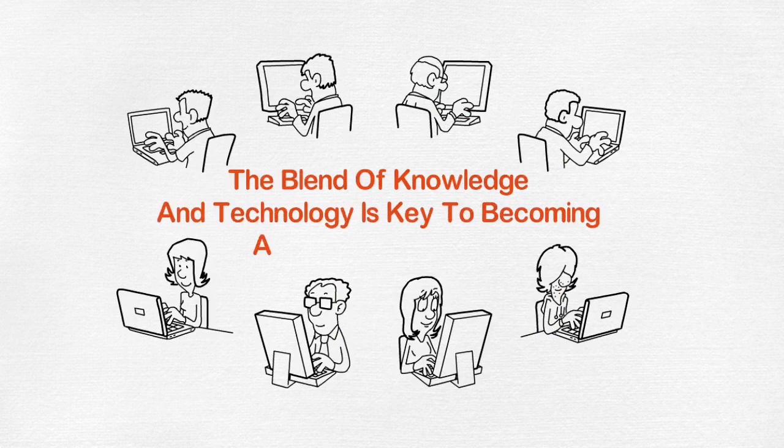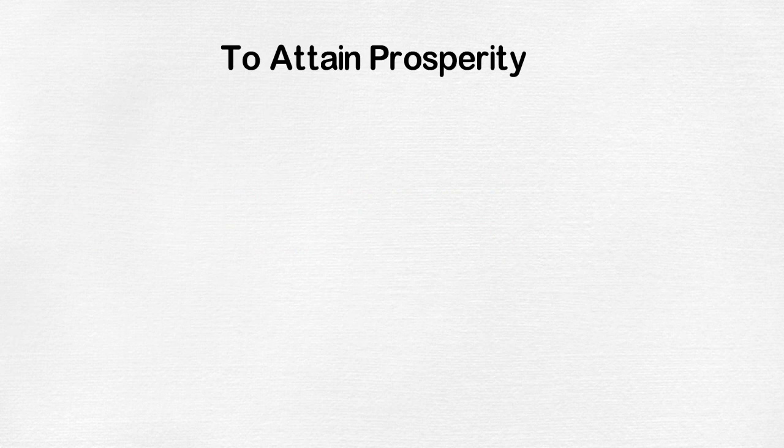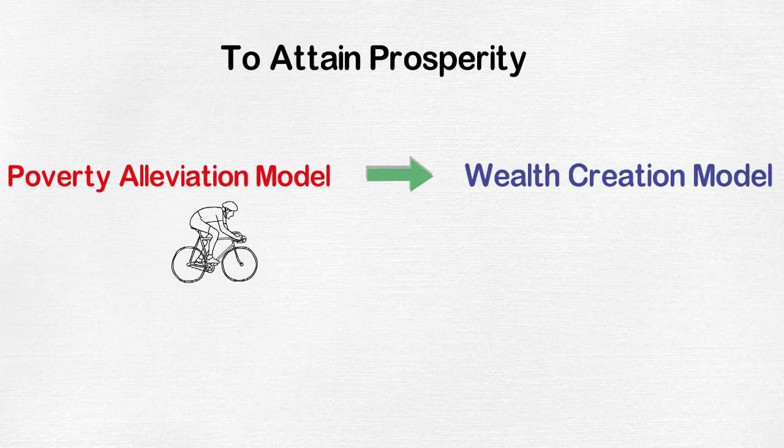The blend of knowledge and technology is key to becoming a productive society. To attain prosperity, Nigeria needs to move from poverty alleviation model to wealth creation model.